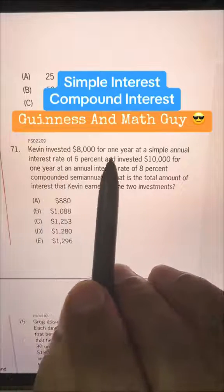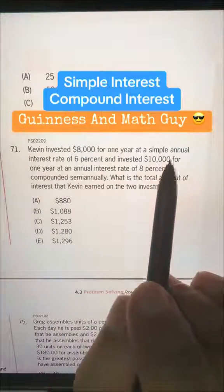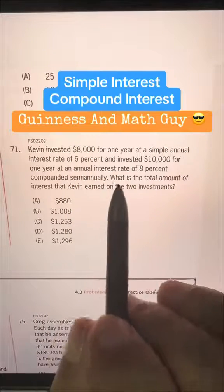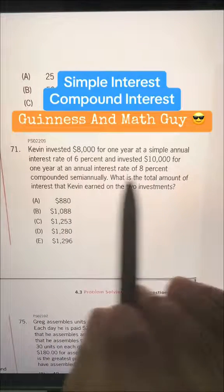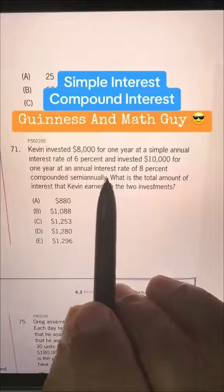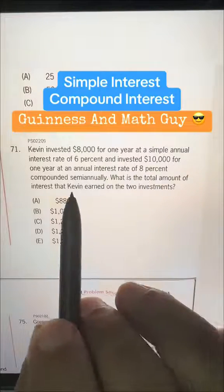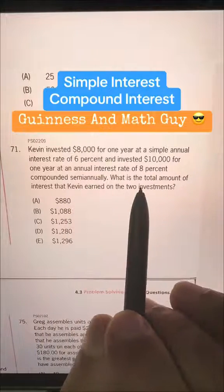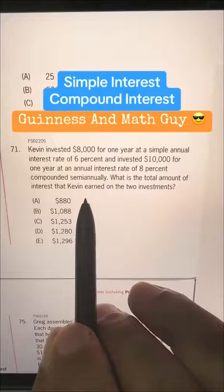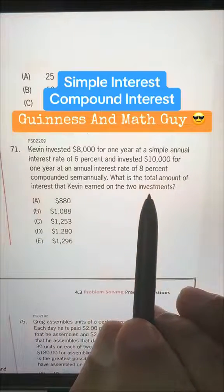Kevin invested $8,000 for one year at a simple annual interest rate of 6% and invested $10,000 for one year at an annual interest rate of 8% compounded semi-annually. What is the total amount of interest that Kevin earned on the two investments?